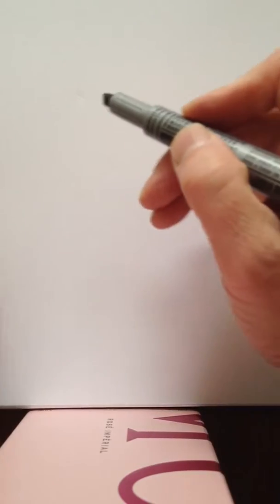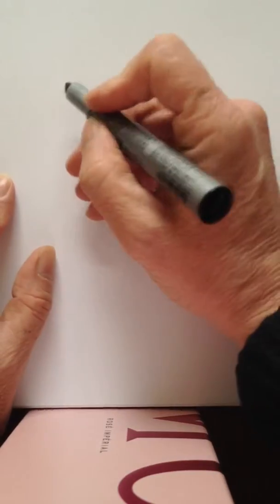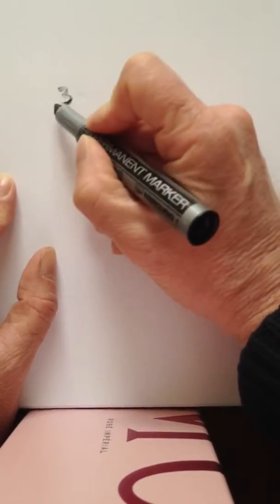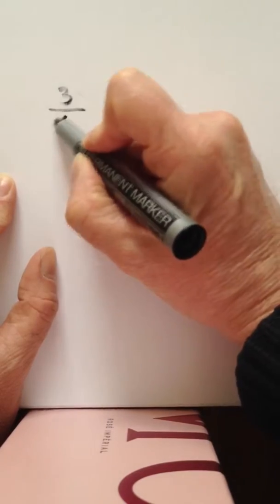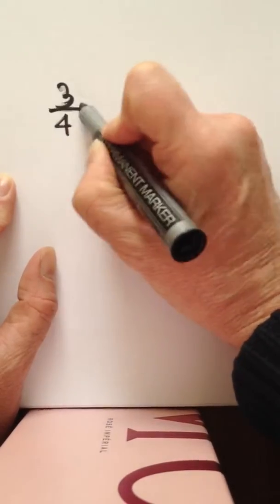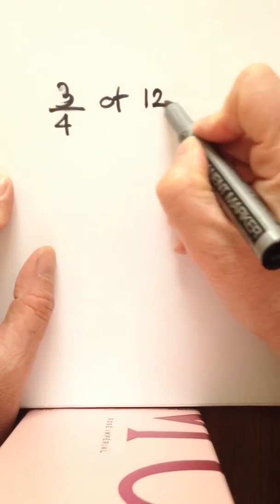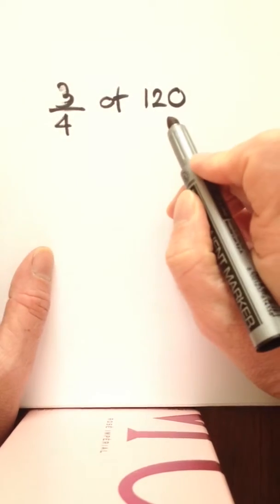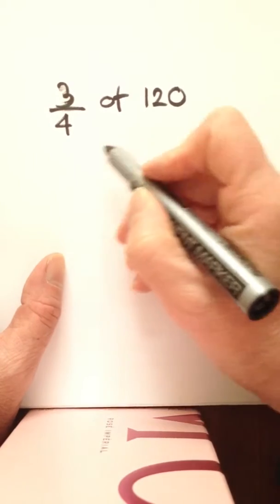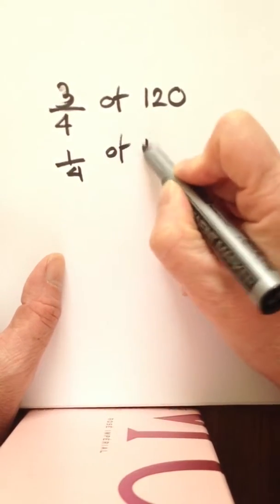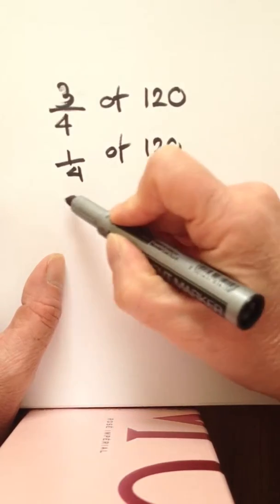All right, we're going to do fractions of amounts. Let's show you how we would do three quarters of 120. To do three quarters of 120, first of all we've got to find one quarter of 120. That's 120...